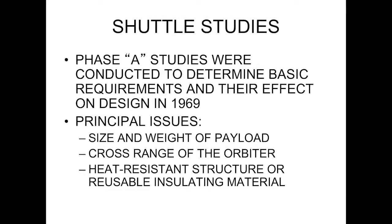Dale mentioned the Air Force requirements. The Phase A studies were conducted to determine the base requirements and their effects on design in 1969. The principal issues were the size and weight of the payload, the cross range of the orbiter, and what kind of heat material you were going to use. You had to recognize that the heat resistance — whether to use heat-resistant structure or reusable insulating material — was a key question. Our background was Mercury, Gemini, Apollo, and they all used an ablative material, which cannot be reused because the surface changes.